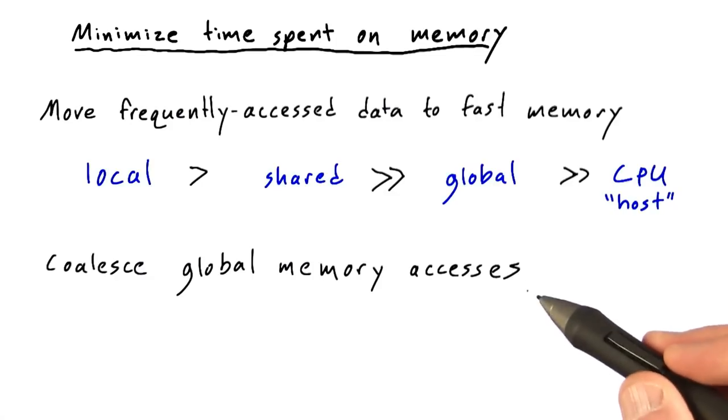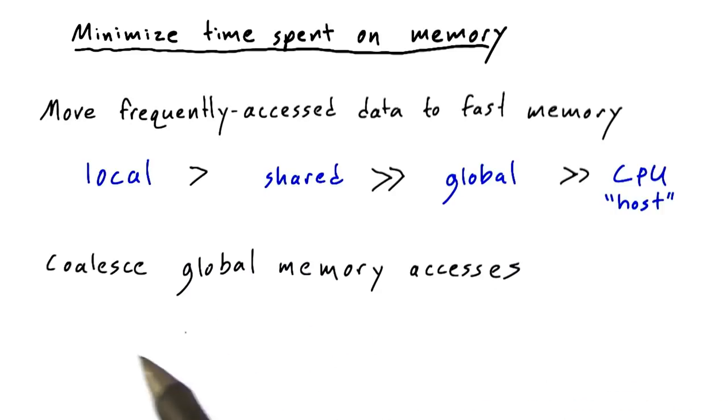The other major thing you can do to minimize the time your program spends in memory accesses is what's called coalescing. We want to coalesce your accesses to global memory. Let me explain what that means.